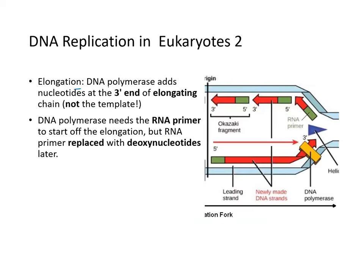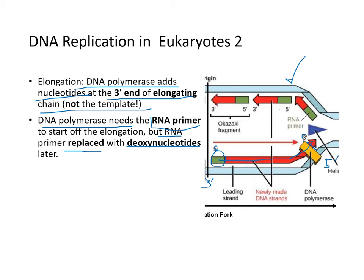During elongation, DNA polymerase adds nucleotides at the 3' end of the elongating chain. DNA polymerase requires an RNA primer to start elongation, but the RNA primer is later replaced with deoxynucleotides. DNA polymerase synthesizes the leading strand continuously in the 5' to 3' direction. The template strand runs 3' to 5'. The other strand is the lagging strand.